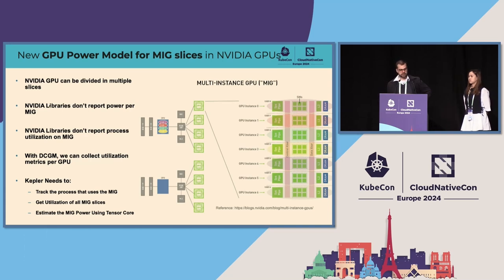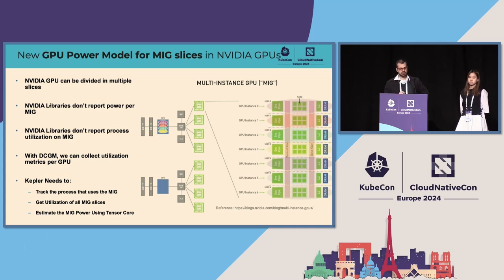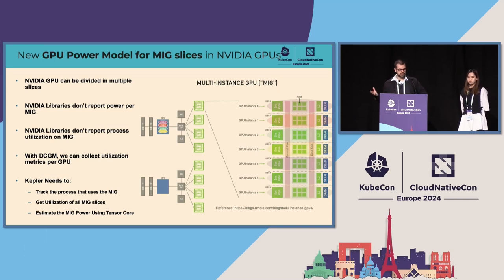The new feature we have right now is support for GPU virtualization — more specifically for the MIG feature, which slices the GPU into different partitions. The GPU MIG feature does not show energy consumption per slice; it only shows energy consumption for the entire GPU. So we need power models for that as well. We collect the power consumption of the entire GPU, get the resource utilization of each slice, partition this energy consumption between slices, and then associate that to the processes running on each slice.